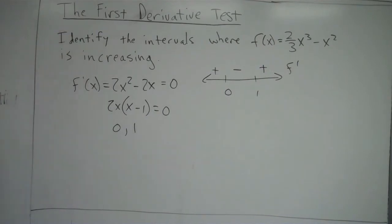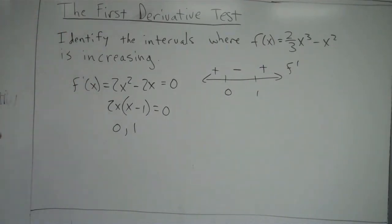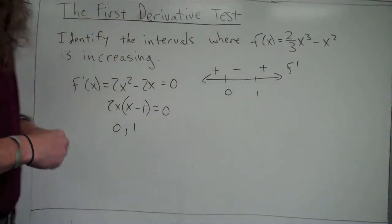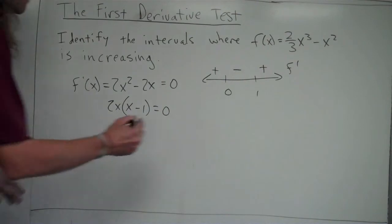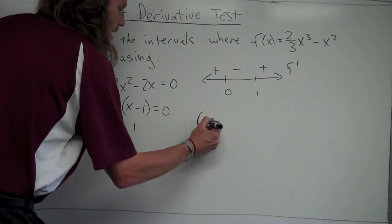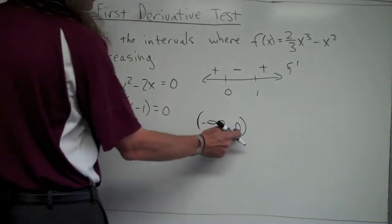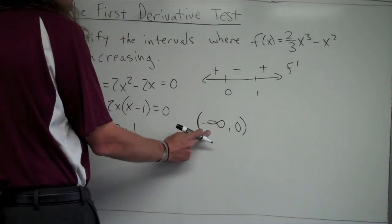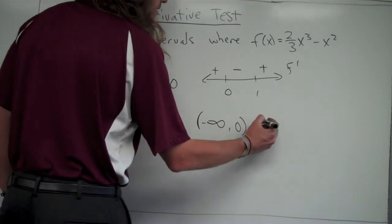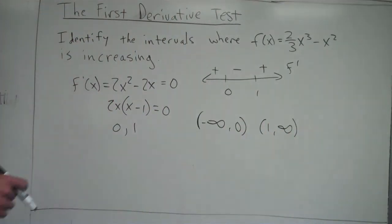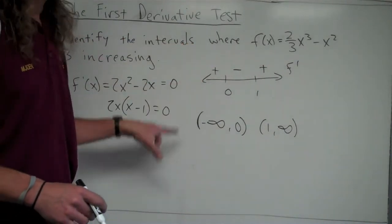Getting back to our problem: we wanted to identify the intervals where f is increasing, which is where f prime is positive. So my answer is the interval from negative infinity to zero, and from one to infinity — those are the intervals where f is increasing, since those are the intervals where f prime is positive.